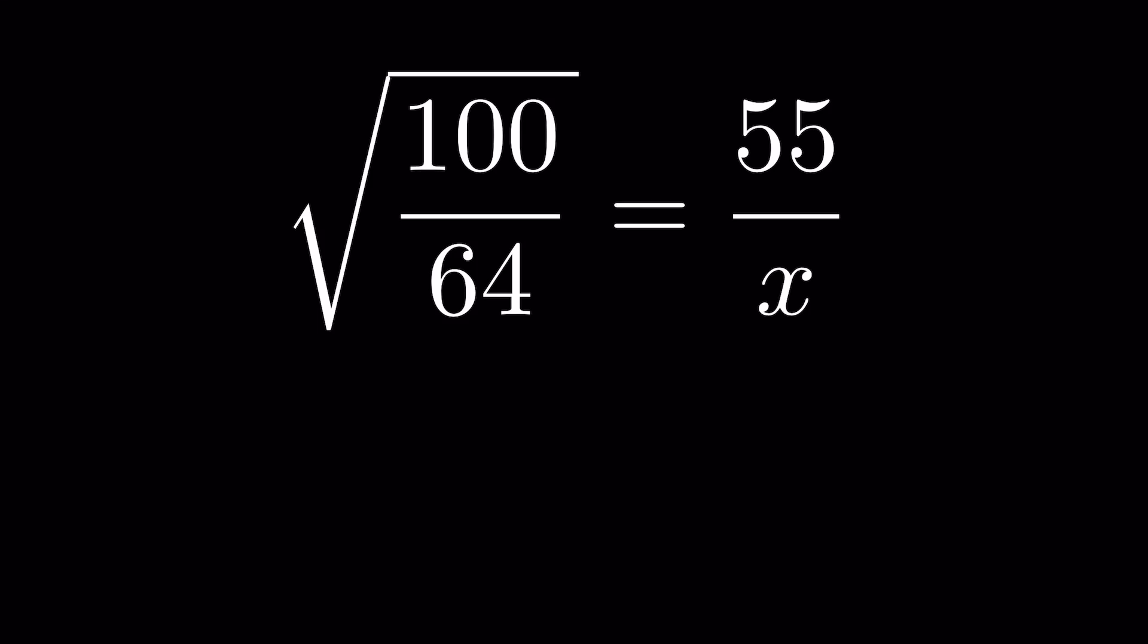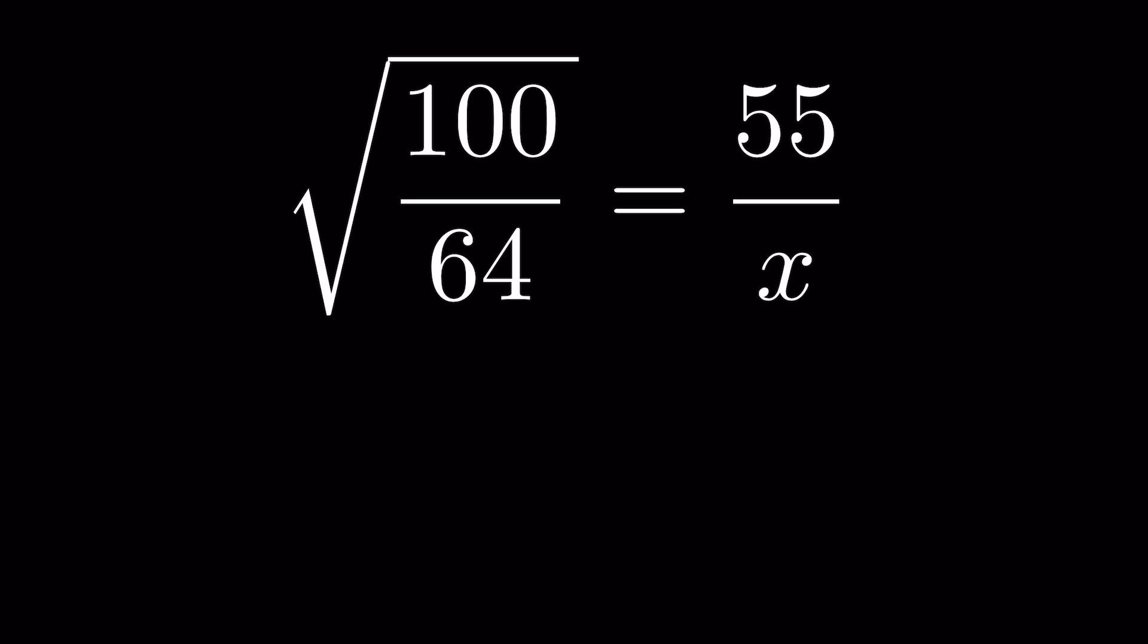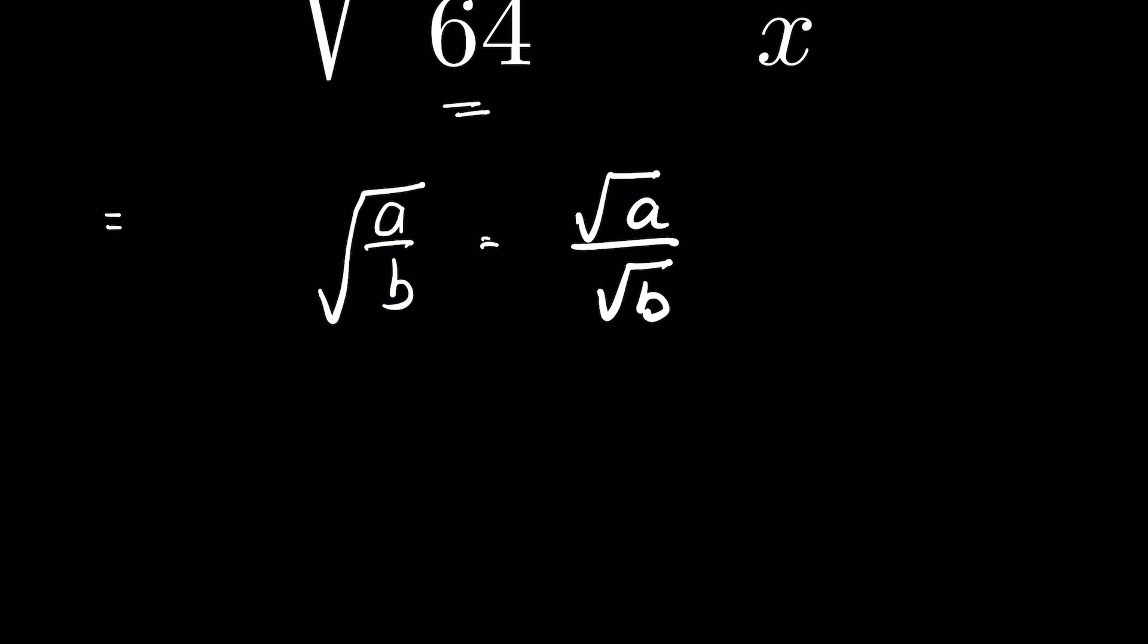100 upon 64 under square root is equal to 55 upon x. This is in the form of a upon b under square root, and this we can write it as square root of a upon square root of b.